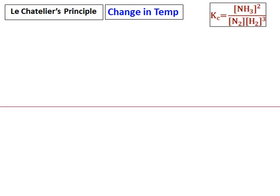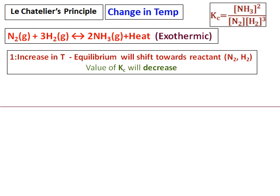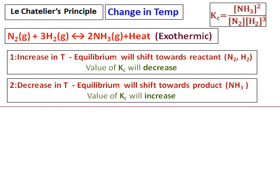Now let's see how change in temperature affects an exothermic reaction. If I increase the temperature in the reaction — nitrogen plus hydrogen giving ammonia, which is exothermic — to counteract this increase, the reaction should go in the direction where temperature is less. Since heat appears on the product side, the reaction goes towards the reactant. The equilibrium will shift towards the reactant. Unlike the previous two cases, any change in temperature will affect the equilibrium constant, because Kc depends only on temperature. Since the equilibrium shifts towards the reactant, reactants are increasing, and therefore the value of Kc will decrease.